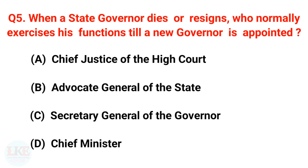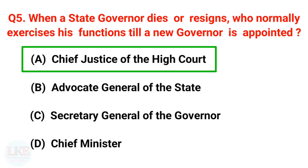Question number 5: When a state governor dies or resigns, who normally exercises his functions till a new governor is appointed? Options: A) Chief Justice of the High Court, B) Advocate General of the state, C) Secretary General of the Governor, D) Chief Minister. The right answer is option A, Chief Justice of the High Court.